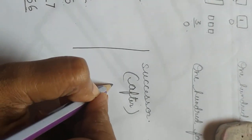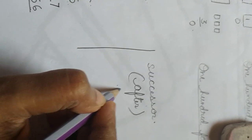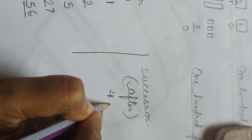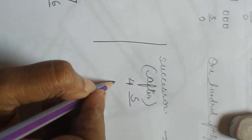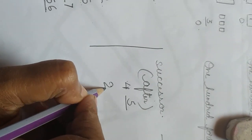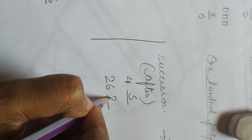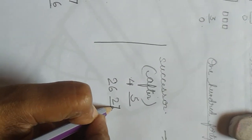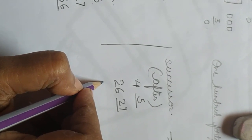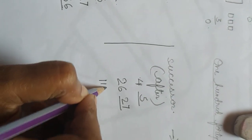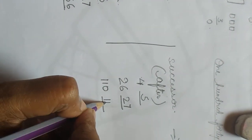Now tell me — this single-digit number 4. After 4, which number comes? 5. Very good. Now next — 26. After 26, which number comes? 27. Now a three-digit number — 110. After 110 comes 111.